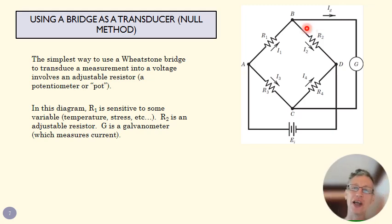We adjust our pot here to make sure that we have a balanced bridge. So we balance the bridge, then the temperature changes, this changes, and now it's unbalanced. And so then we change R2 to make sure that the new ratio between R1 and R2 still matches the ratio between R3 and R4.